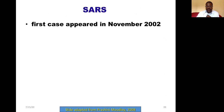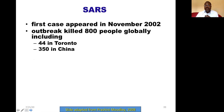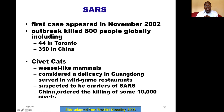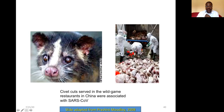SARS stands for Severe Acute Respiratory Syndrome. The first case appeared in November 2002, and that outbreak killed almost 800 people globally, including in Canada and China. Civet cats were seen to play a major role in the transmission of the disease. The first case started in China in a city called Guangdong.